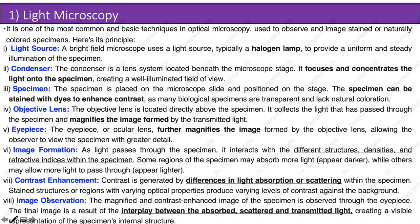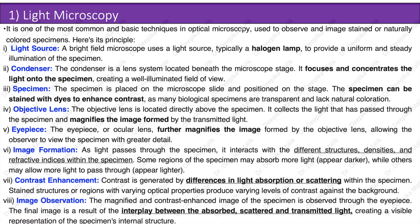Light microscopy is one of the most common and basic techniques in optical microscopy, used to observe and image stained or naturally colored specimens. Its principles include: a light source — a bright field microscope uses a light source, typically a halogen lamp, to provide uniform and steady illumination. The condenser is a lens system located beneath the microscope stage that focuses and concentrates light onto the specimen, creating a well-illuminated field of view.